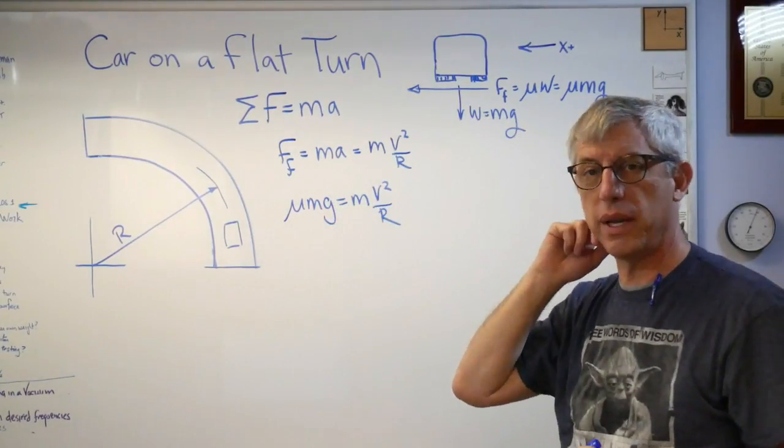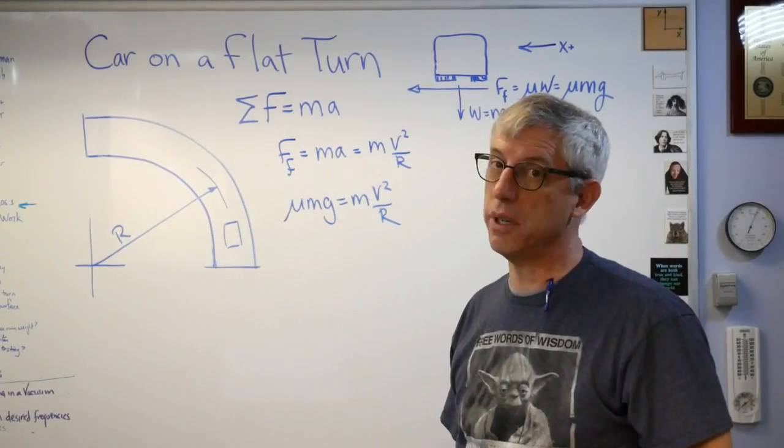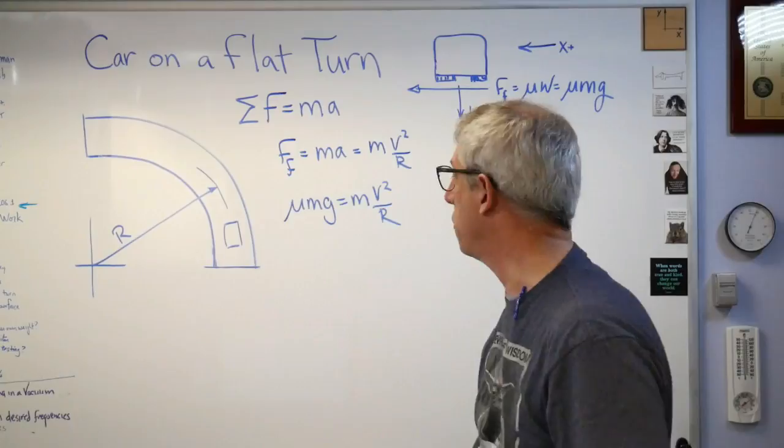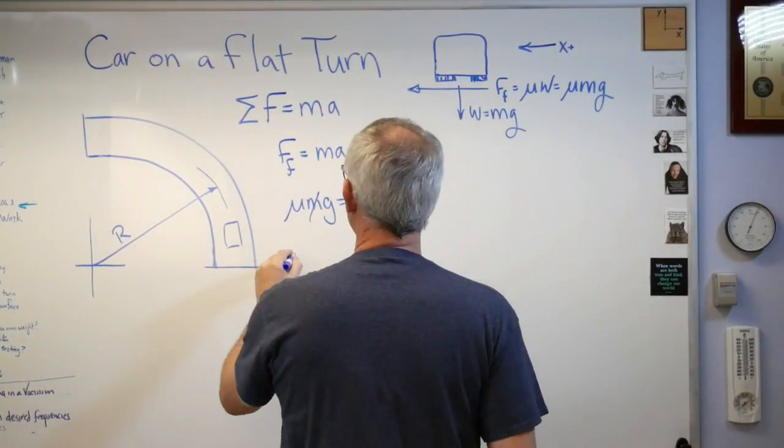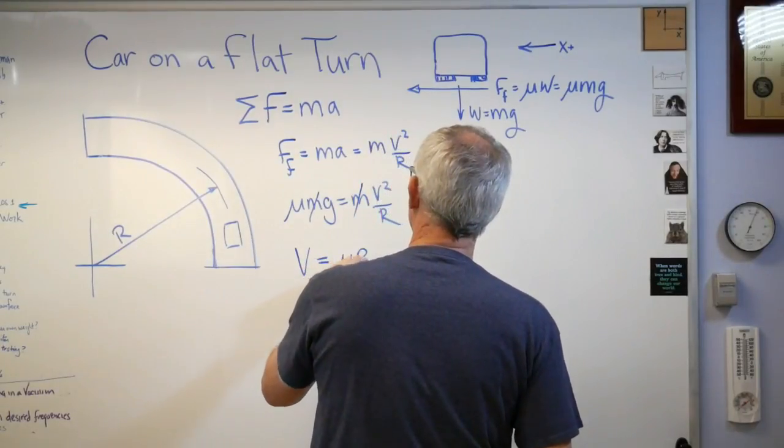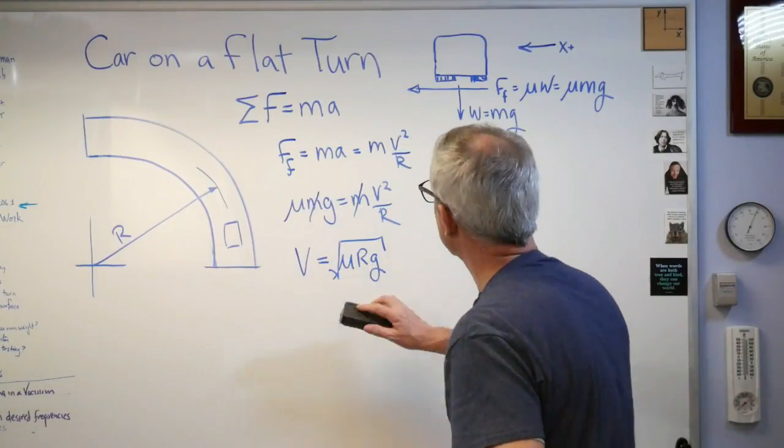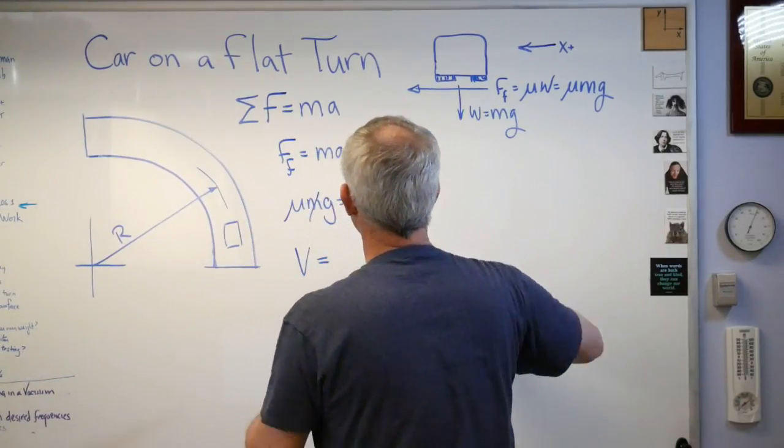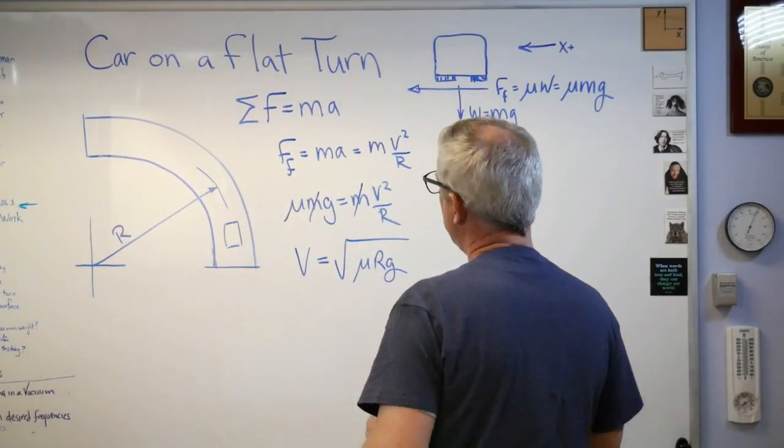That doesn't look too bad. Now notice mass is in both sides of the equation. As long as mass isn't zero, I can divide through by m. And do a little bit of math here, and I'm going to get v is the square root of mu r g.